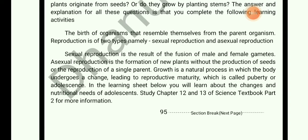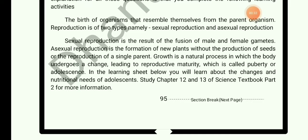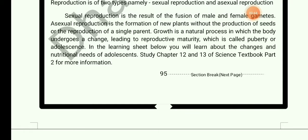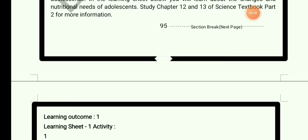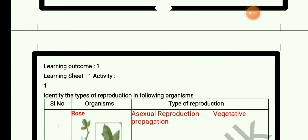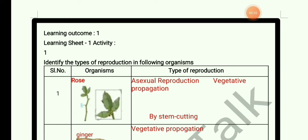Reproduction is the process of producing young ones from their parents. There are two types of reproduction: sexual reproduction and asexual reproduction. When seeds are sown in the soil and watered, seeds germinate and new plants grow. There are various methods to grow new plants.